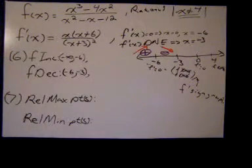Relative max and min points occur when the first derivative goes from positive to negative or negative to positive — that is, when the original function goes from increasing to decreasing or decreasing to increasing — and the original function must be defined at that point. At negative 3 and 4, those conditions aren't met. But at x equals negative 6, the function is defined and we go from increasing to decreasing, so we have a relative maximum there — at the point negative 6, f of negative 6.